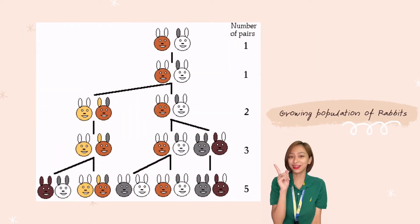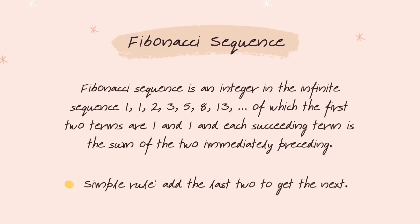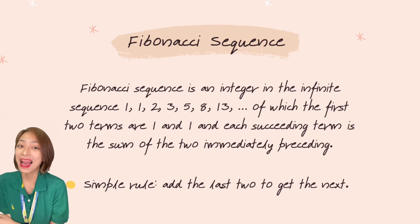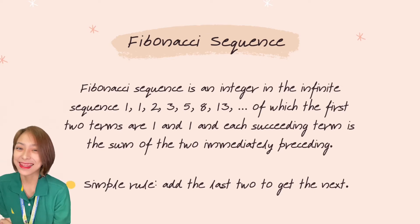Let's consider this illustration. The Fibonacci Sequence is an integer in the infinite sequence 1, 1, 2, 3, 5, 8, 13, and so on, of which the first two terms are 1 and 1, and each succeeding term is the sum of the two immediately preceding. Simple rule: add the last two to get the next.